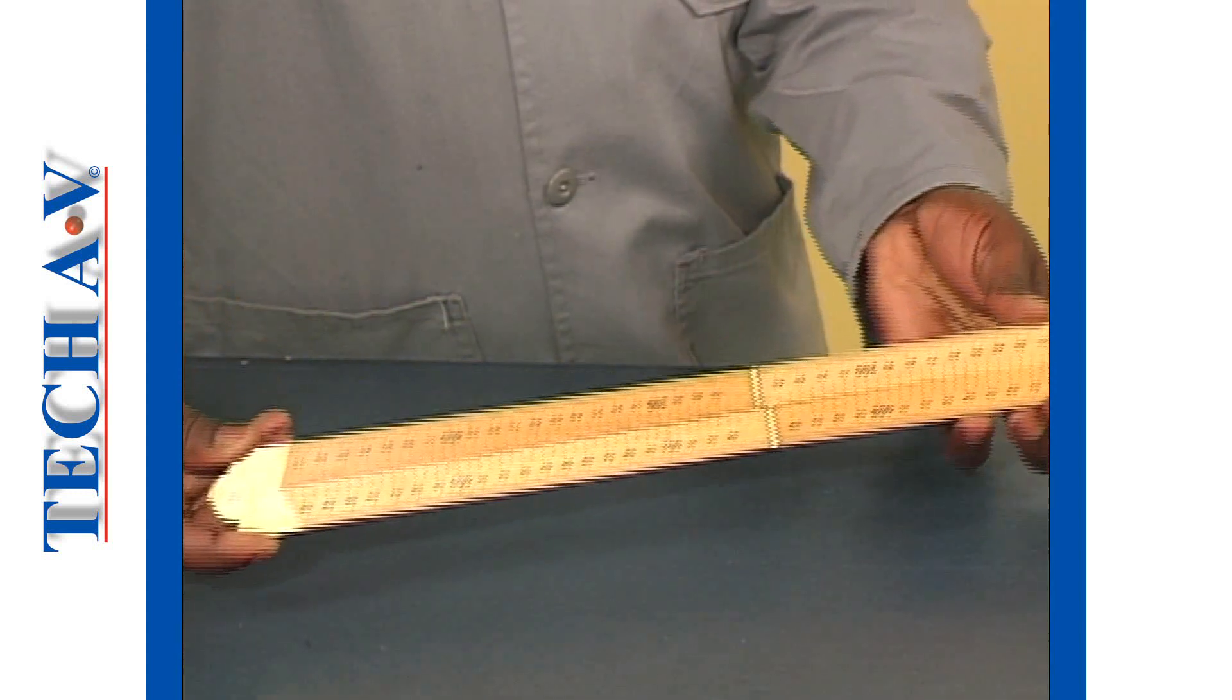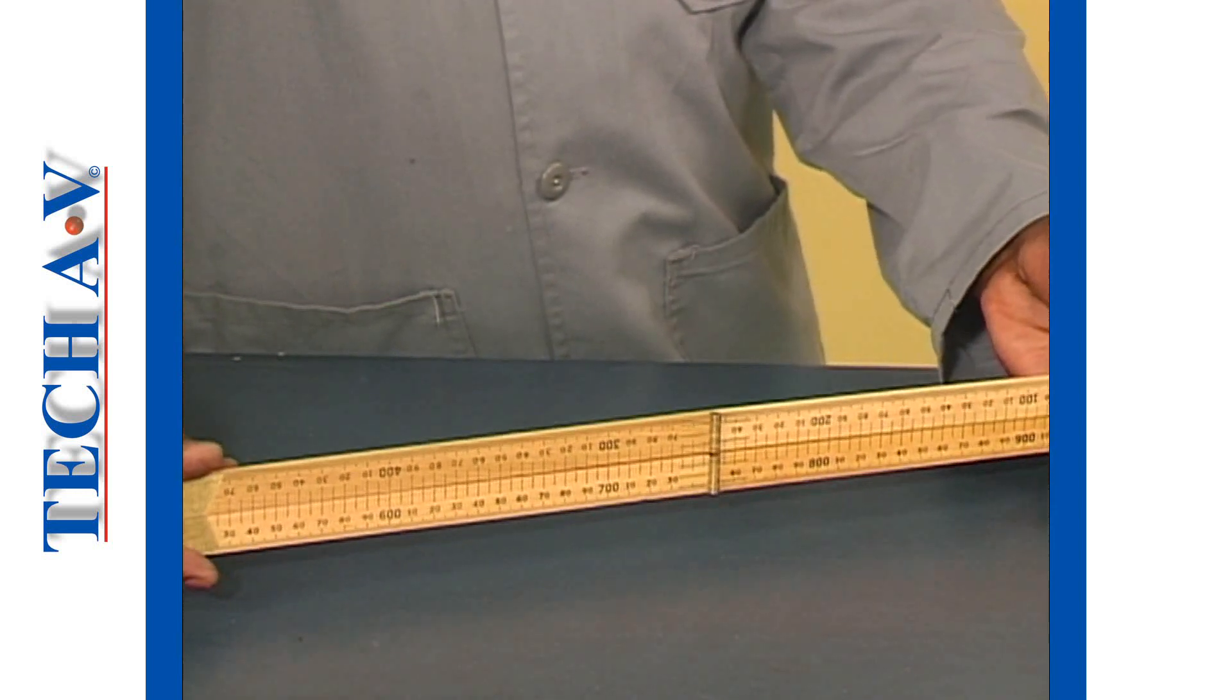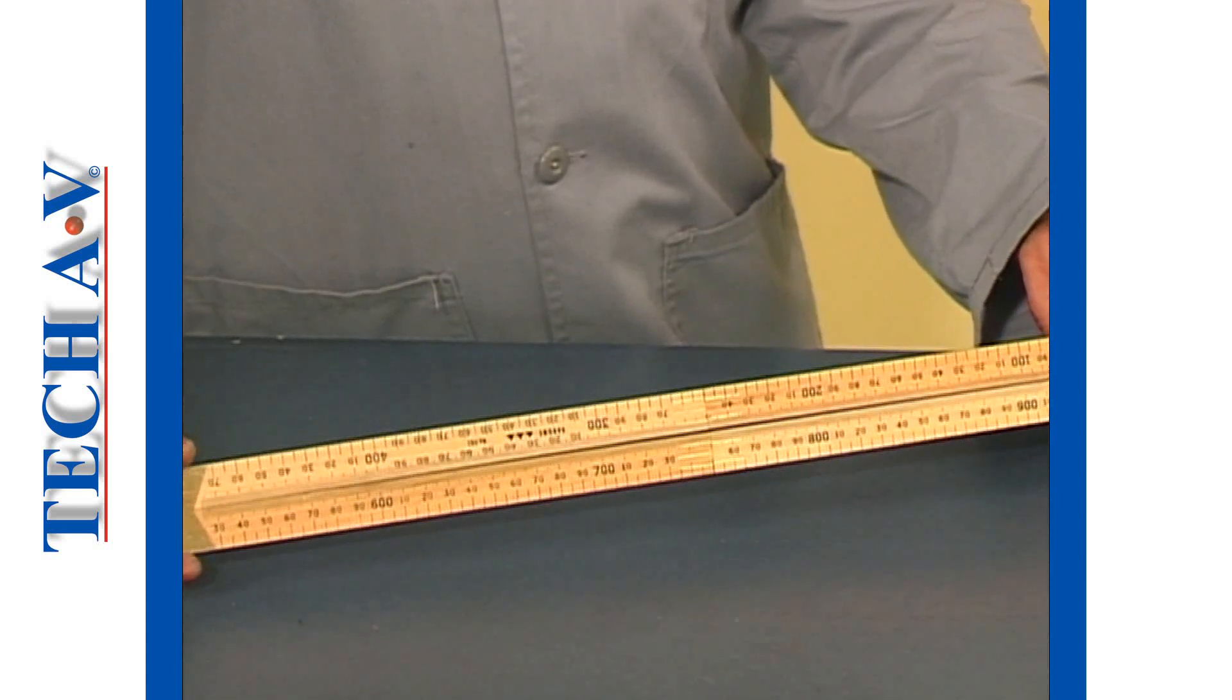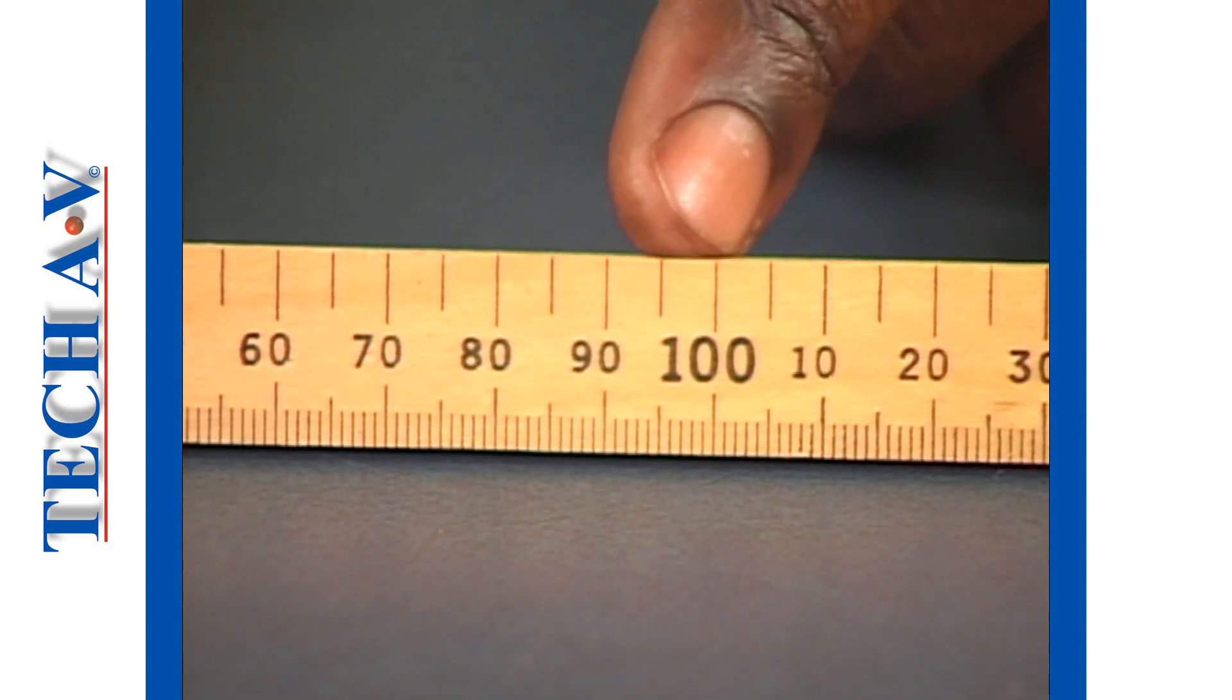Let's next learn how to read the meter folding rule. You'll notice that both sides of the rule are marked off and the markings or numbers are given in millimeters. The rule is marked in 100 millimeter main divisions.